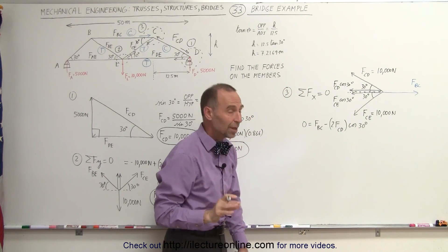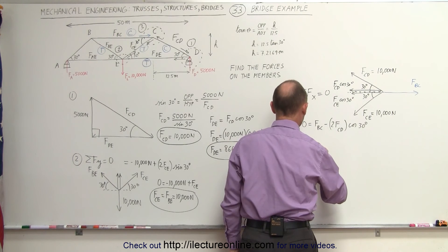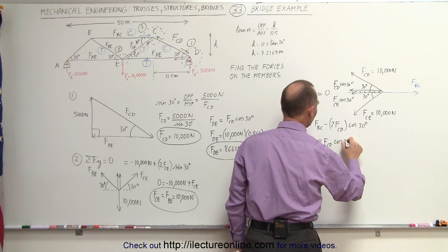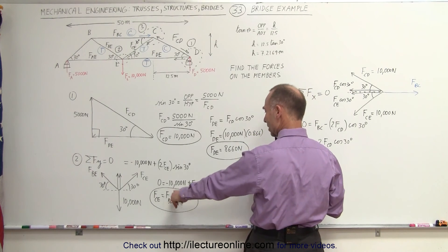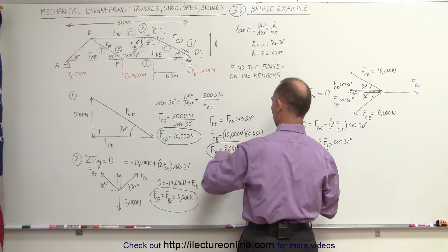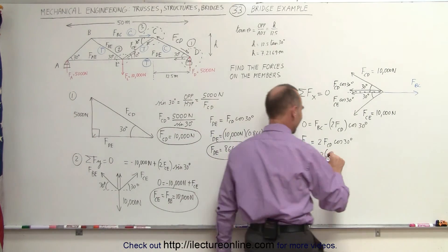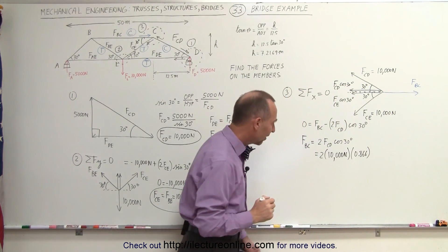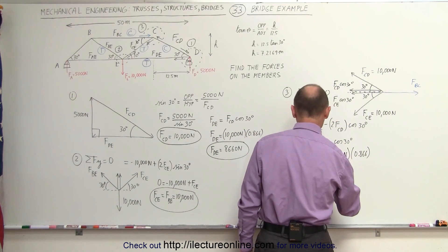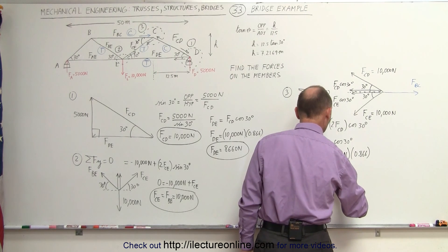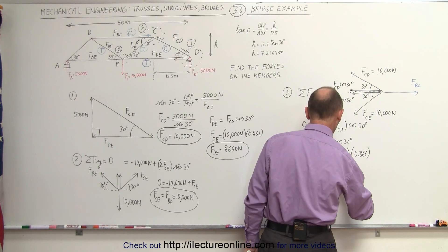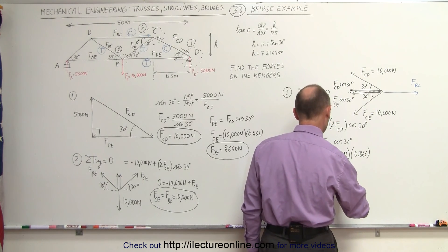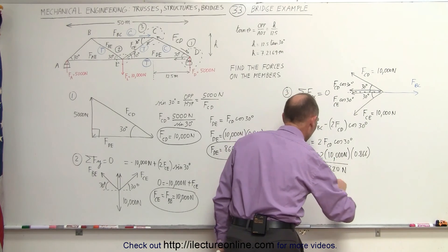So FBC equals 2 times FCD times cosine 30 degrees, which is 2 times 10,000 newtons times 0.866. That gives FBC equal to 17,320 newtons, and it's a compression force.